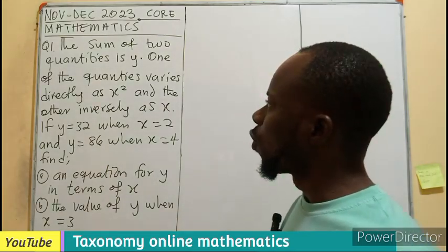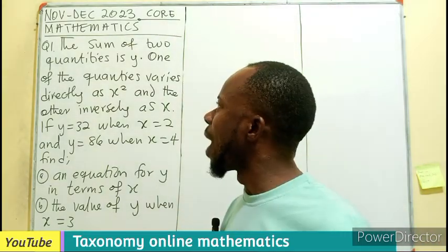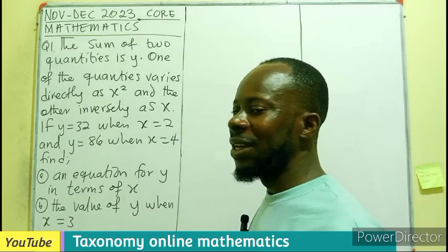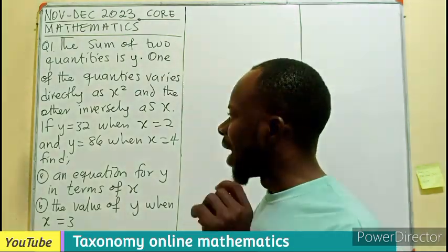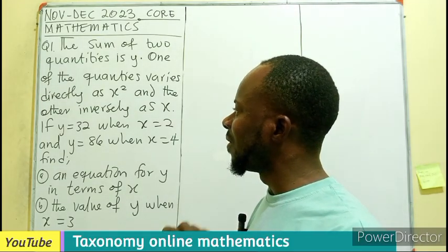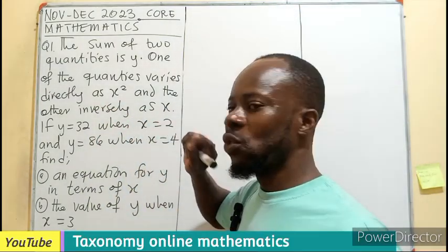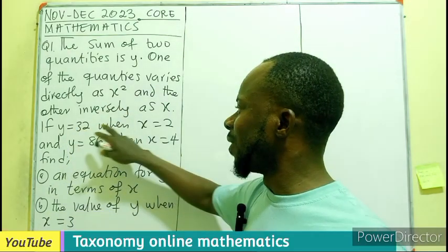The sum of two quantities is Y. One of the quantities varies directly as X squared and the other quantity varies inversely as X. So if the value of Y is 32,